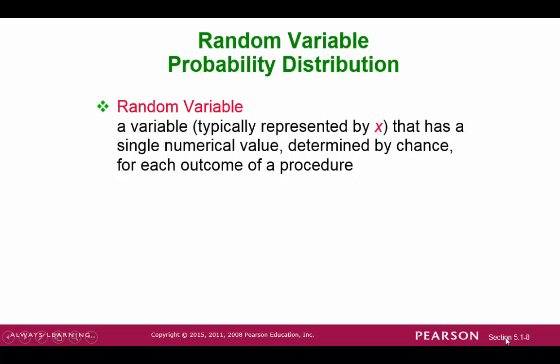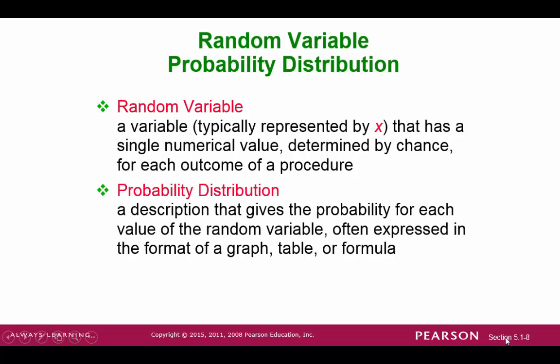Our first and very important definition is a random variable. So a random variable is essentially a variable that has a numerical value. Each of the random variables has an associated probability, and this probability will build our probability distribution. The probability distribution can be expressed as a graph, a table, or a formula. We'll use a combination of these, but mainly we'll focus on graphs and tables.